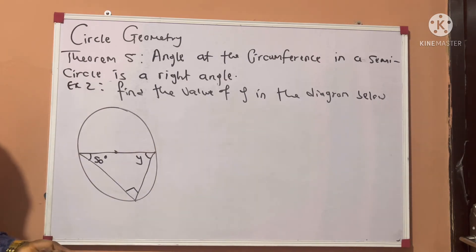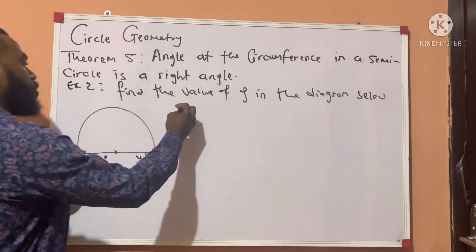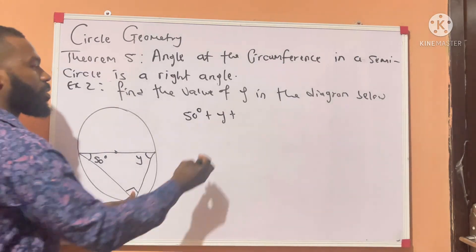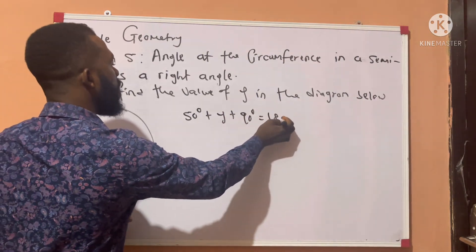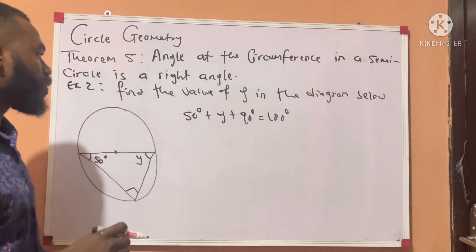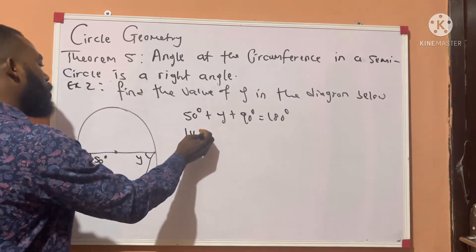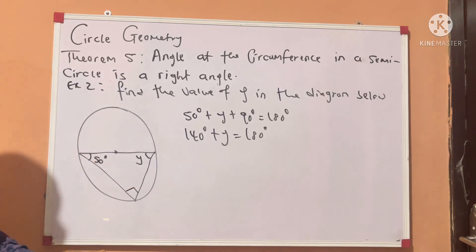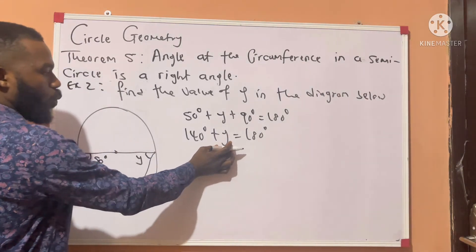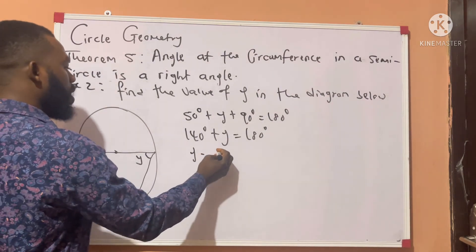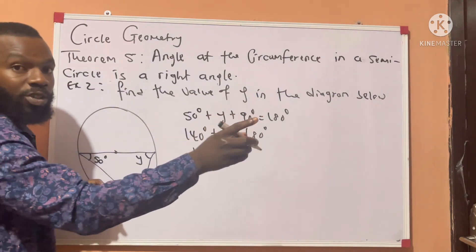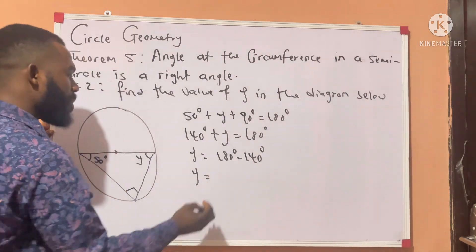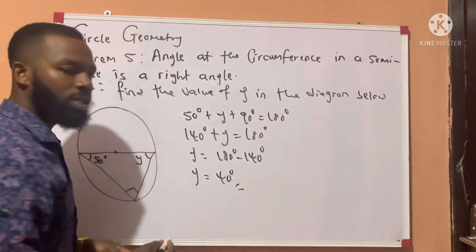Applying the sum of angles in a triangle: the first angle is 50 degrees, plus Y, plus 90 degrees, equals 180 degrees. Now 50 plus 90 gives us 140 degrees. So we have 140 + Y = 180. Collecting like terms, Y = 180 minus 140 = 40 degrees.